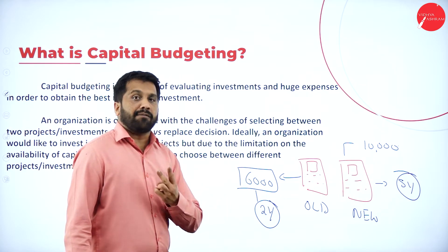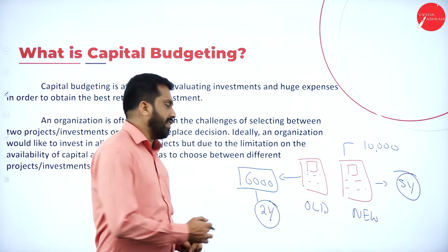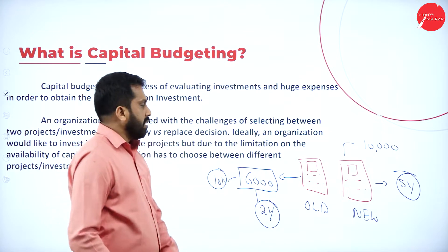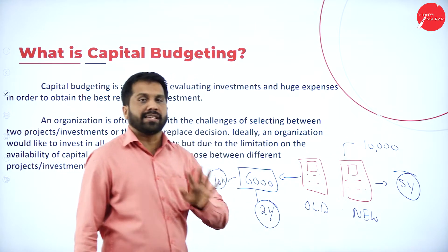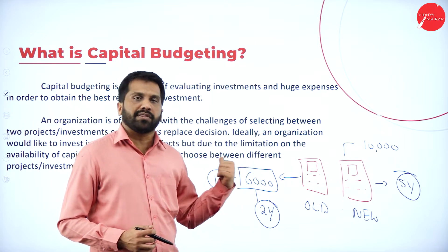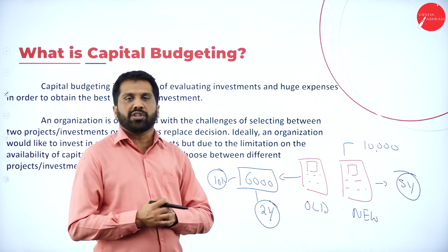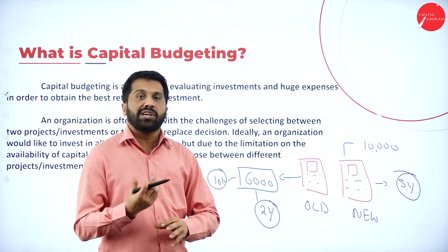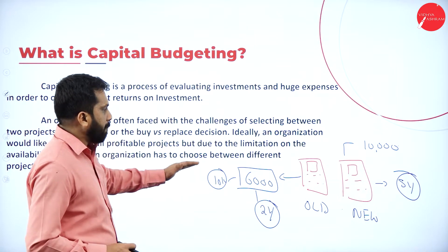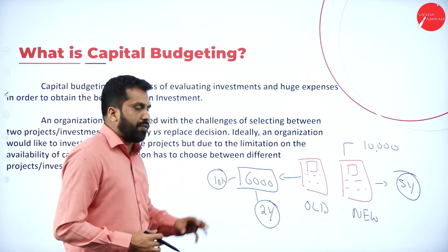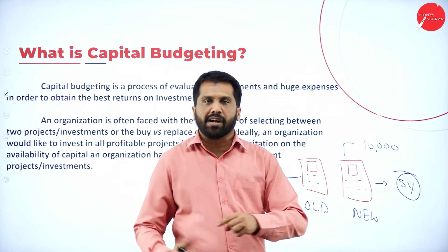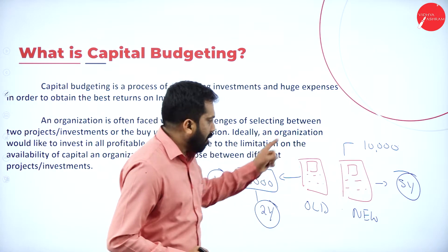If I go for the old mobile by paying 6,000, after 2 years I have to spend another 10,000 — it will total 16,000. If I go for the new mobile at 10,000, I can use it for 5 years. These calculations happen in capital budgeting: should I use the existing machine or should I go for the new machine? There is a project, there is a plan, and you should take a decision after doing your capital budgeting. To do all this we have many techniques.